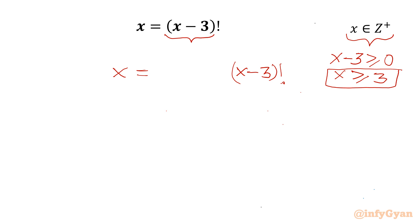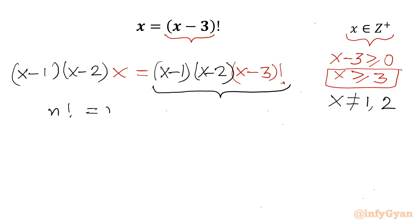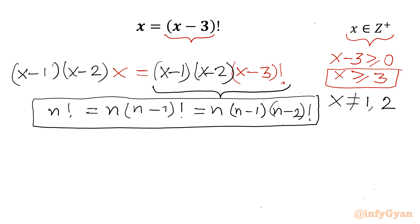Now I will multiply both sides by (x-1) times (x-2), since x cannot be 1 and x cannot be 2. On the right-hand side we will use the recursive formula for factorials: n! can be written as n times (n-1)!, or n times (n-1) times (n-2)! and so on. We will apply this recursive formula to the RHS.